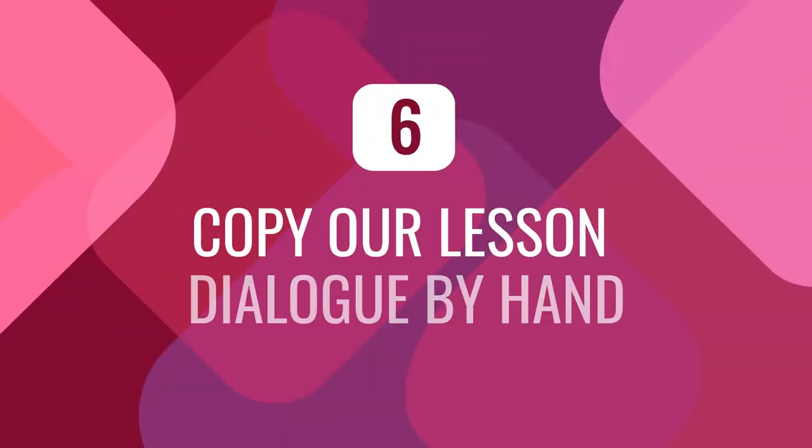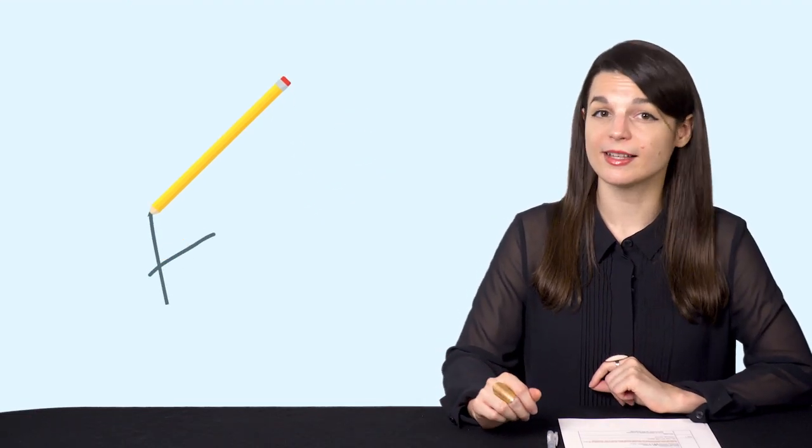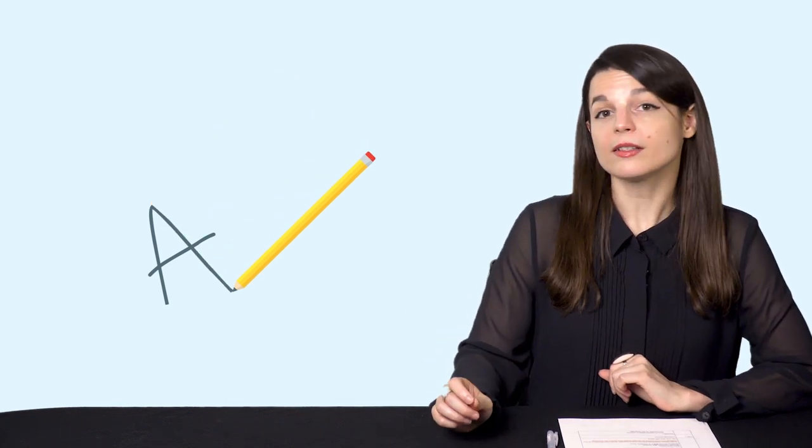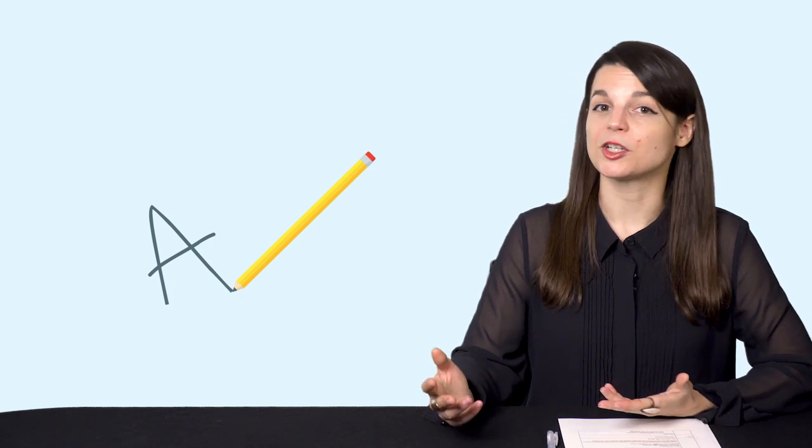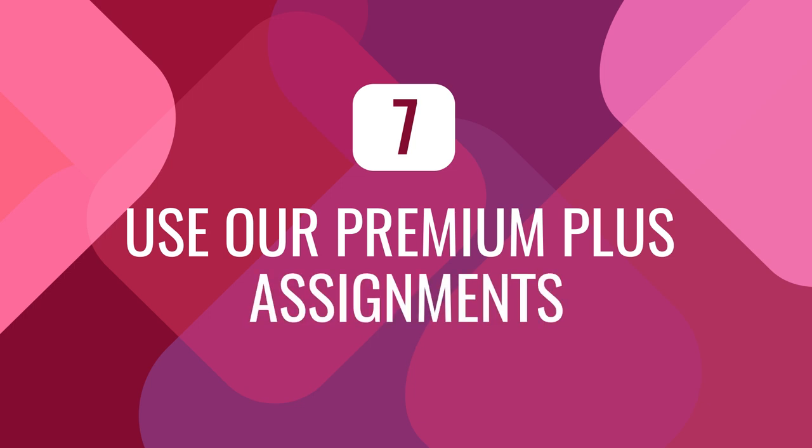Number six, for writing, try and copy out our lesson dialogue by hand. The point here is to see if you can write smoothly or not as a way of assessing your writing. You can also do this with any textbook. You can also take a picture of your writing and send it to your Premium Plus teacher for feedback. Number seven, use our Premium Plus assignments. If you're a Premium Plus member, you can ask your teacher to send you weekly assignments based on your needs, whether for reading, writing, speaking, or listening. And they'll provide you feedback so you can see where you are with each skill.